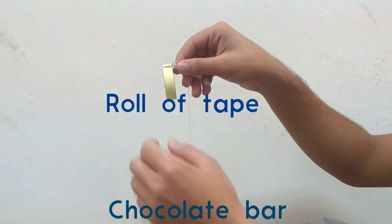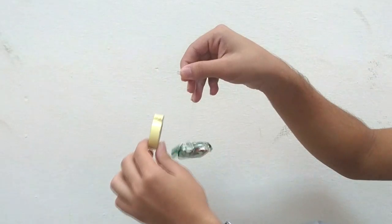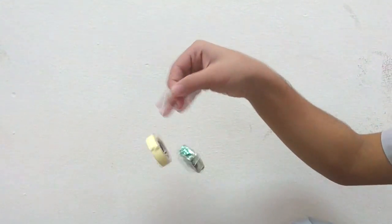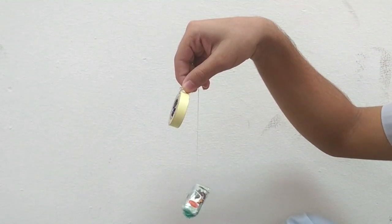Here we have a roll of tape connected to a chocolate bar by a string. As we can see, the chocolate bar is heavier than the roll of tape. But what do you think would happen if I start rotating the roll of tape?